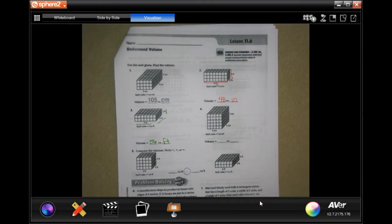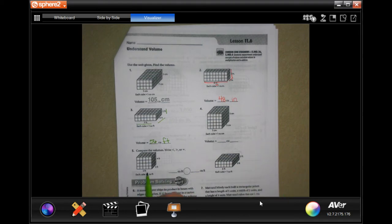We're going to do number five together. It's 5 times 3 times 4. Well, 5 times 4 is 20, and 20 times 3 is 60.